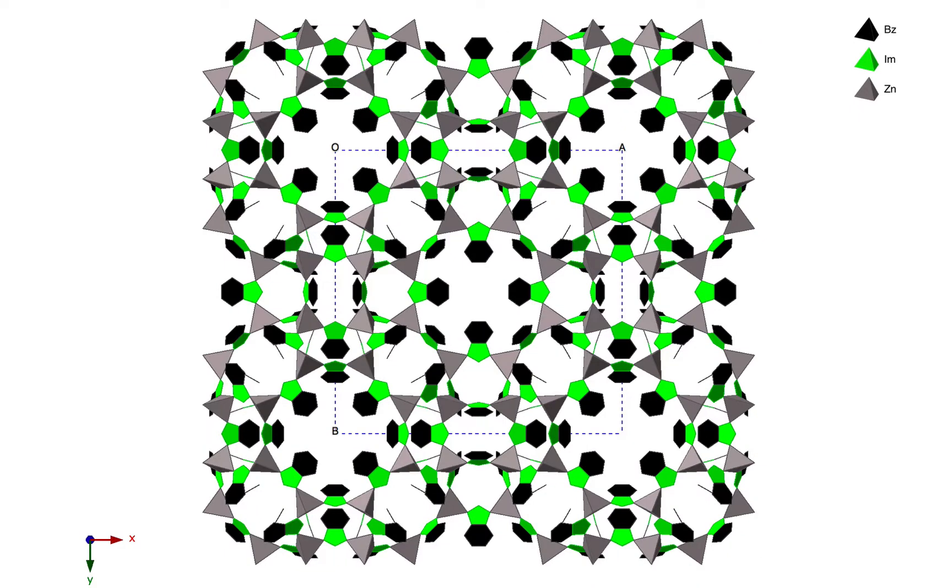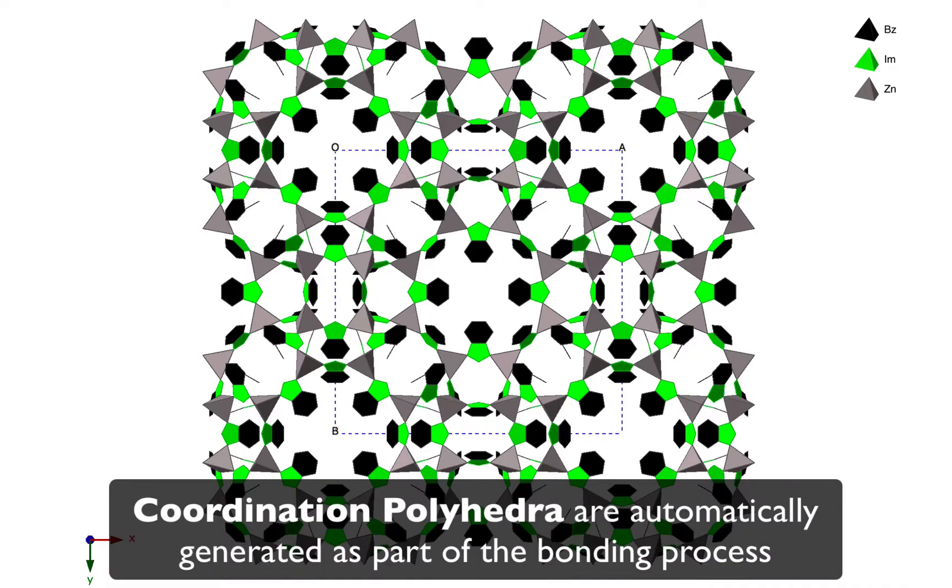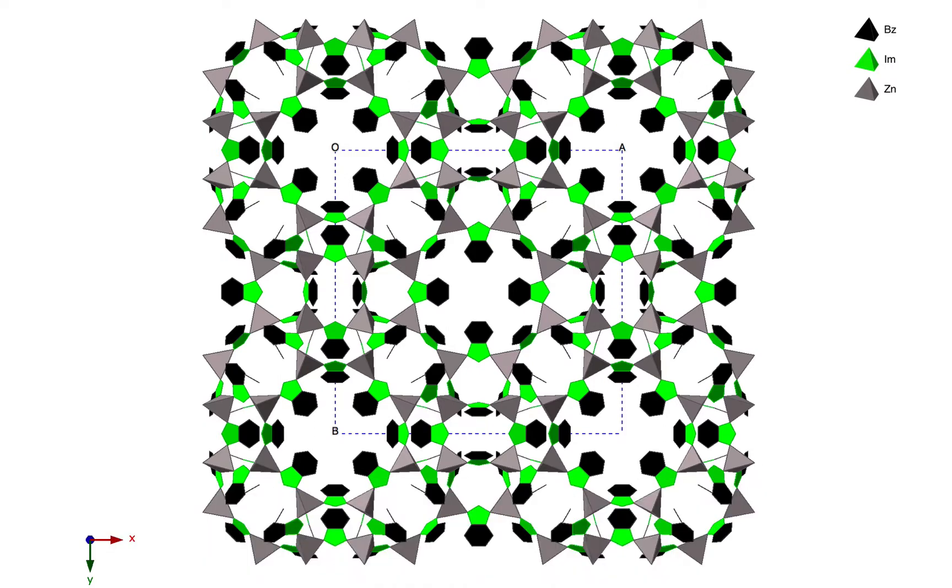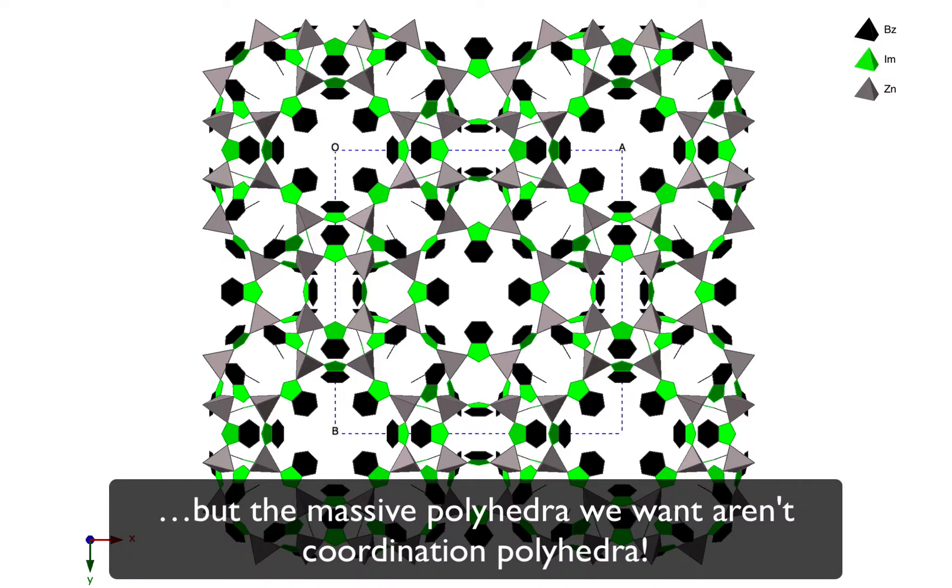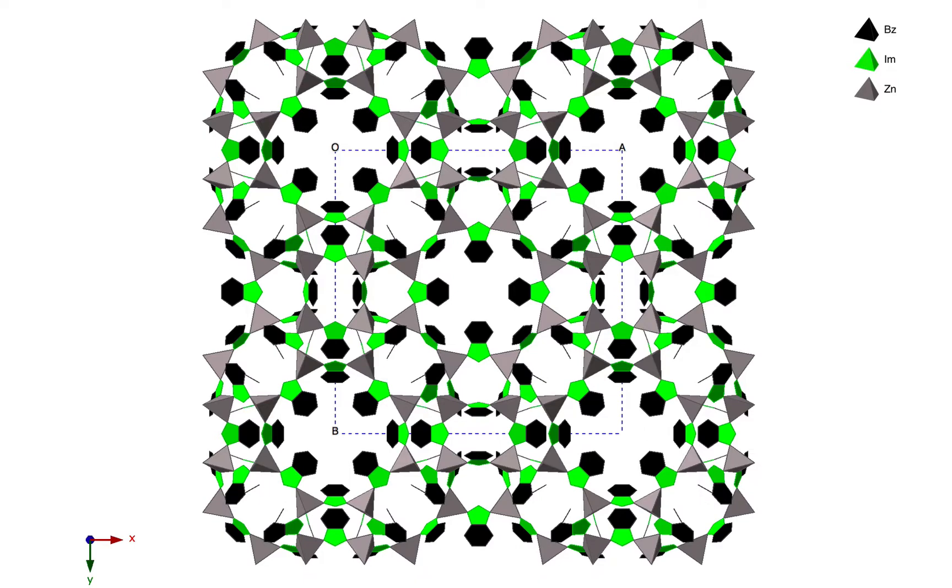We can use our built-in polyhedral model, and CrystalMaker generates coordination polyhedra automatically for you as part of the bonding process. You specify which atoms to plot as which types of polyhedra, but this doesn't generate the massive polyhedra automatically. It only generates polyhedra around existing sites with bonds.